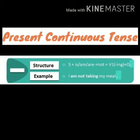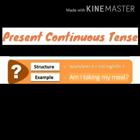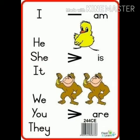To form an interrogative sentence in present continuous tense: the helping verb (is/am/are) comes at the start, followed by the subject, then verb first form with -ing, then object, and we must put a question mark. Example: 'Am I taking my meal?'